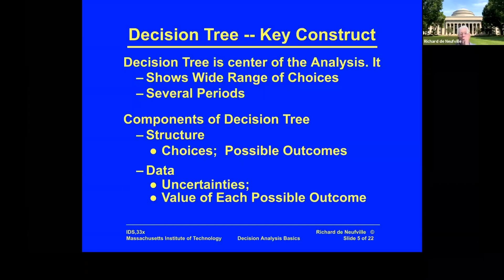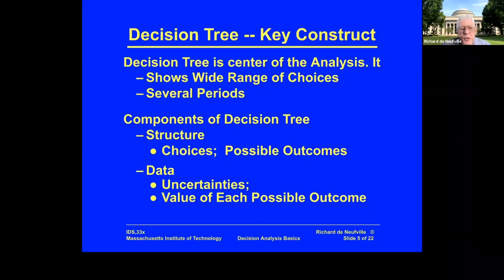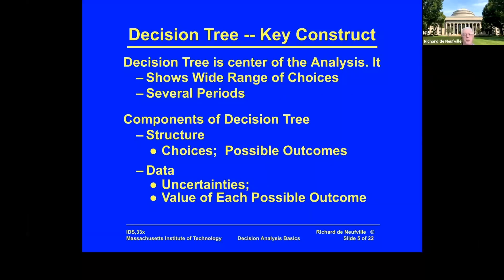Now, the central element of decision analysis is the decision tree. It shows choices over several periods and has basically four elements: the choices, the structure — the way you draw it — the possible outcomes, and the data, both about uncertainties that may occur and the value of the outcomes.